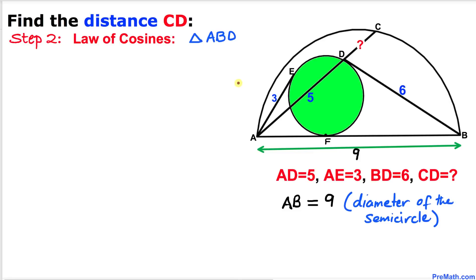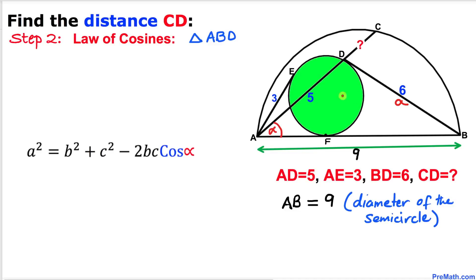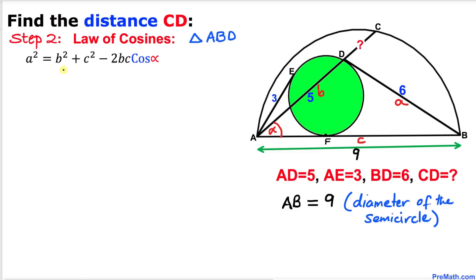In this next step, let's focus on triangle ABD and apply the Law of Cosines: A² = B² + C² − 2BC·cos(α). Calling the angle at A as α, the opposite side BD is A = 6, side AD is B = 5, and side AB is C = 9. Substituting: 6² = 5² + 9² − 2(5)(9)cos(α), giving us 36 = 25 + 81 − 90·cos(α).